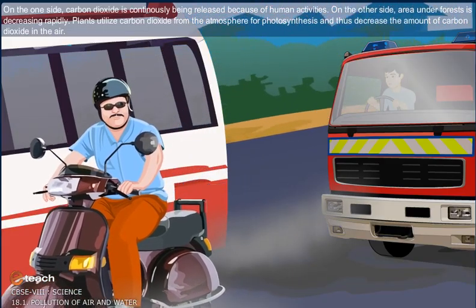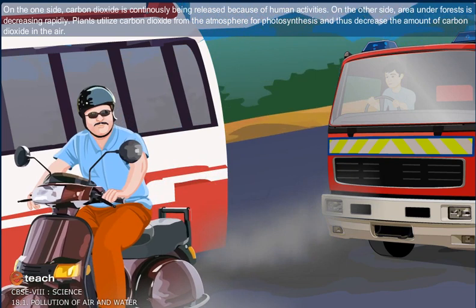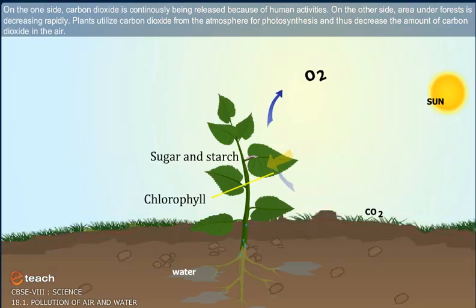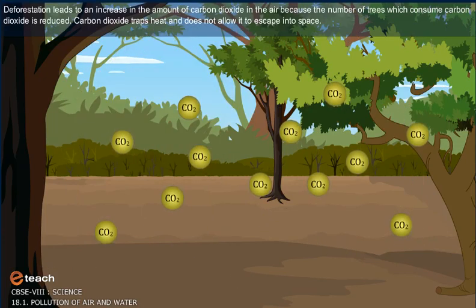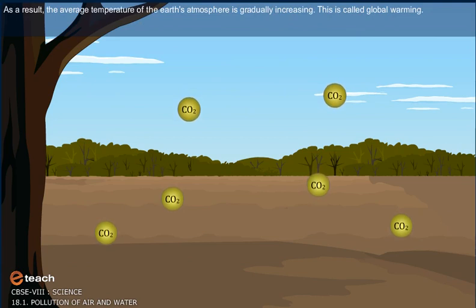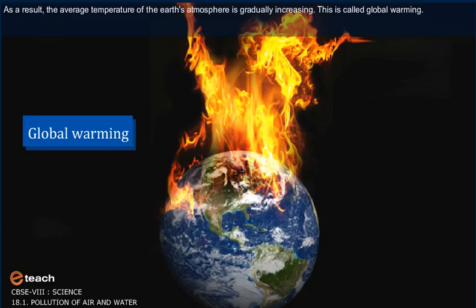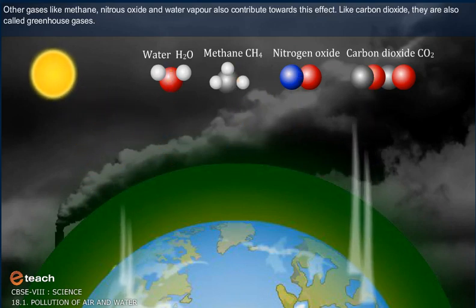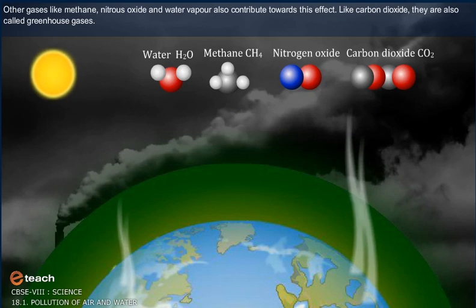On one side, carbon dioxide is continuously being released because of human activities. On the other side, area under forests is decreasing rapidly. Plants utilize carbon dioxide from the atmosphere for photosynthesis and thus decrease the amount of carbon dioxide. Deforestation leads to an increase in the amount of carbon dioxide in the air because the number of trees which consume carbon dioxide is reduced. Carbon dioxide traps heat and does not allow it to escape into space. Other gases like methane, nitrous oxide and water vapor are also called greenhouse gases.